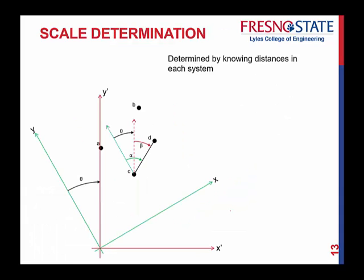So, now that we know what the rotation is, we can figure out what the scale is. Now, scale, on here, you're not going to be able to see it very clearly. But, when you start dealing with local systems and state plane coordinate systems, there are scales that are involved.